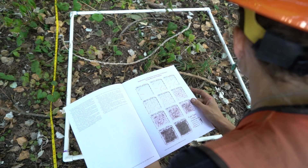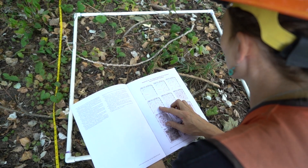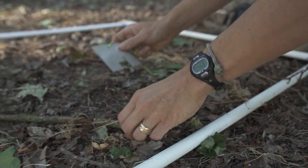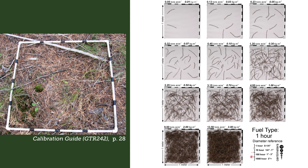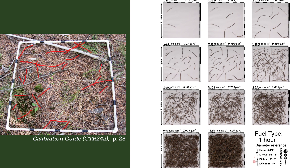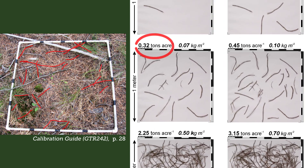Let's go through the photo load process with a simple fuel bed. First, identify your one-hour time lag fuels — using a go-no-go gauge can be very helpful in distinguishing one, ten, and one-hundred-hour fuels. Look to the photo load manual and find which picture overestimates the one-hour fuel loading, and which underestimates it. In this example, we've determined that our one-hour fuel loading is between 0.32 and 0.45 tons per acre. Let's see how close we are to the value from the calibration guide.